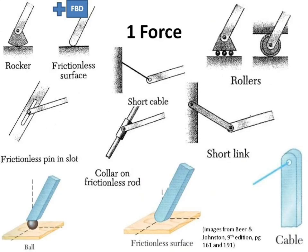These are all the different ways where you get one force — and as you can see, there are a lot of different ways to get one force. All of these objects constrain whatever you're drawing in only one direction. In most of these cases, they are constrained from falling through the surface. Here they are constrained from going perpendicular to the slot or perpendicular to the rod. Here it's constrained from moving along the link. This is along the surface in both cases. All of these things are one force.